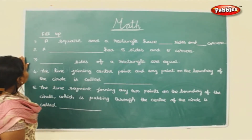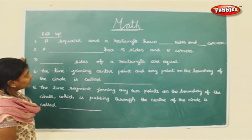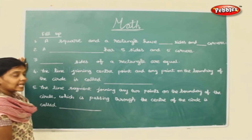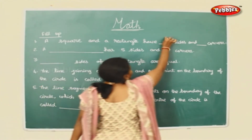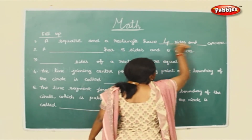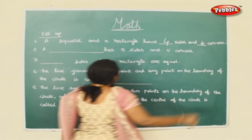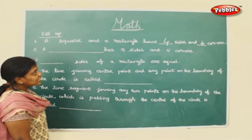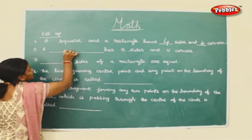We will fill in the blanks. A square and a rectangle have four sides and four corners. How many sides and how many corners do they have? Four sides and four corners. A pentagon has five sides and five corners.